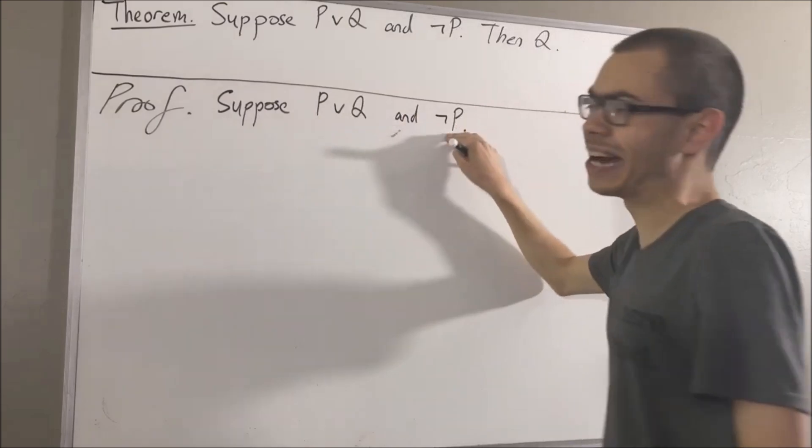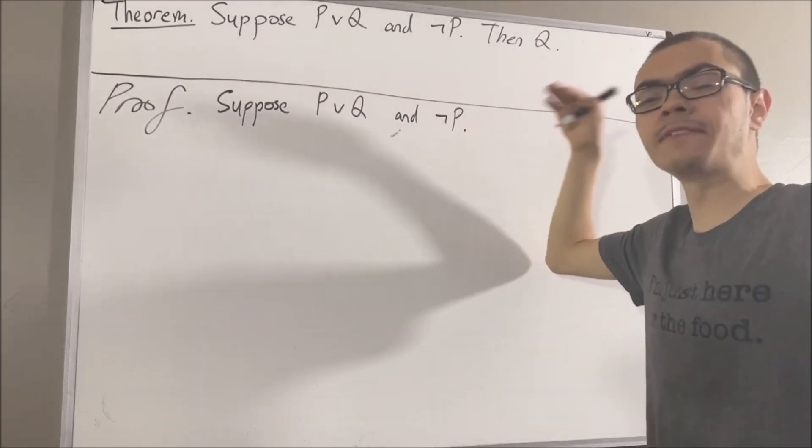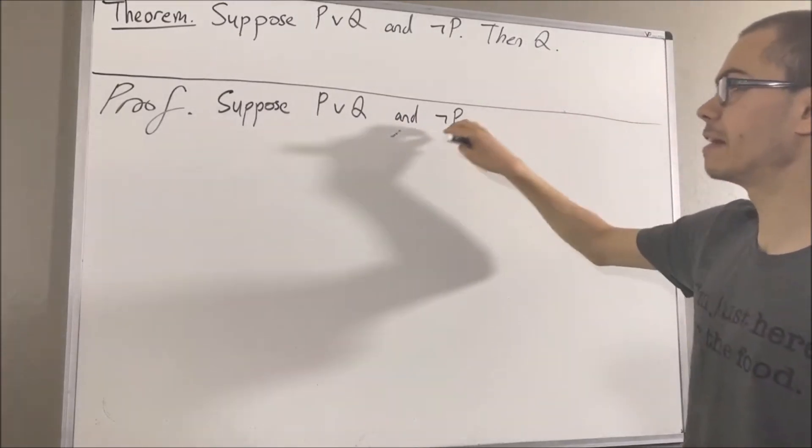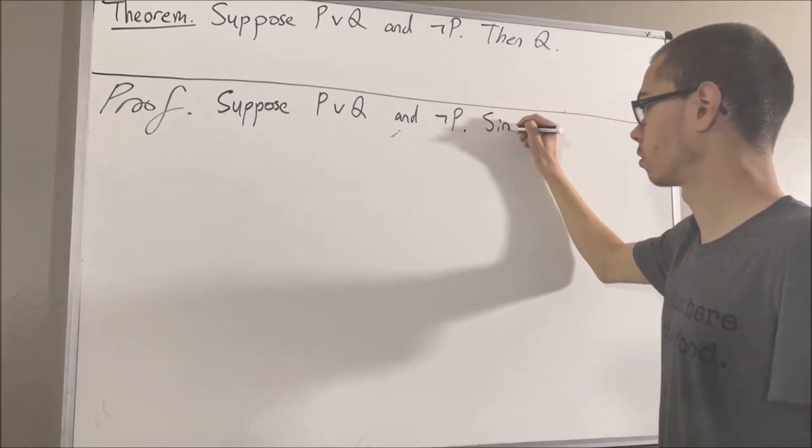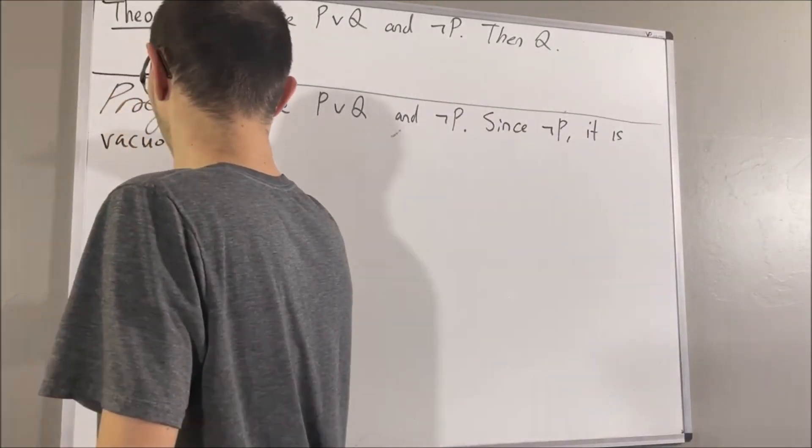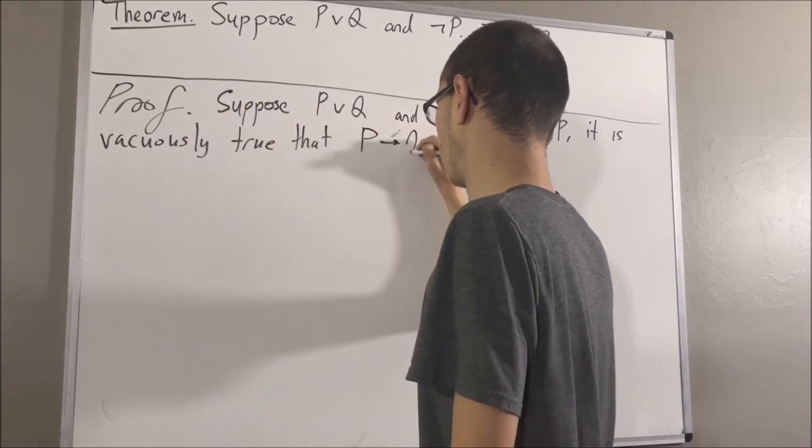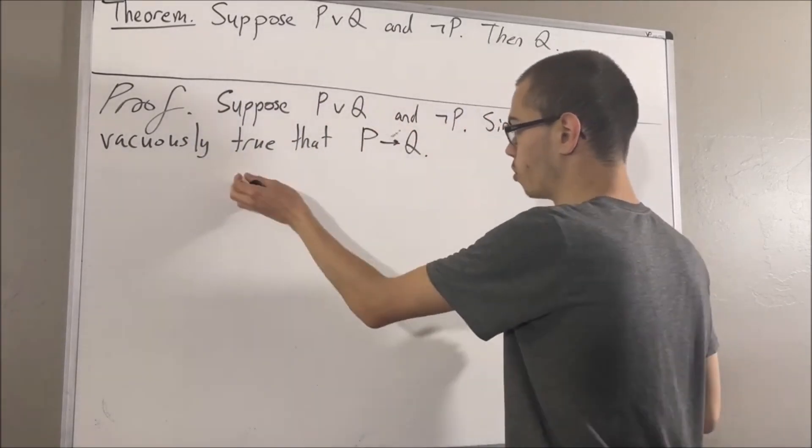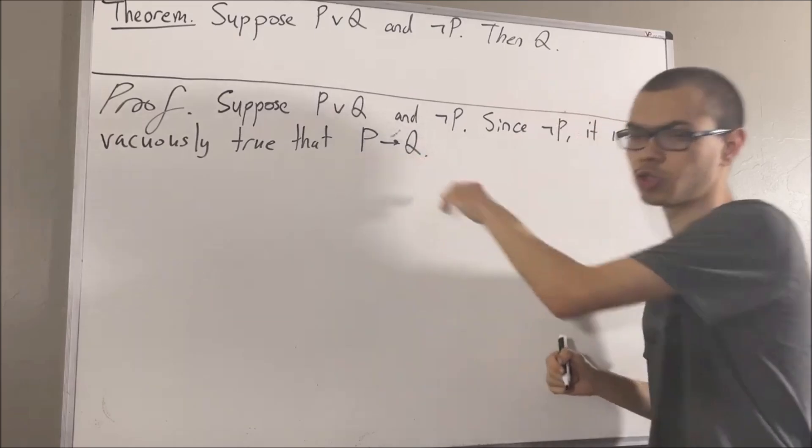Now, since not P is true, it is vacuously true that if not P is false, then Q is true. In other words, it is vacuously true that if P is true, then Q is true.